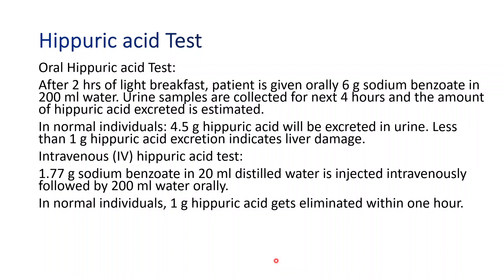Interpretation: if 4.5 grams of hippuric acid is excreted in urine, the patient is normal. This 4.5 grams of hippuric acid is equivalent to 3.6 grams of sodium benzoate. A decrease in urinary excretion of hippuric acid to less than 3 grams indicates acute and chronic liver damage.